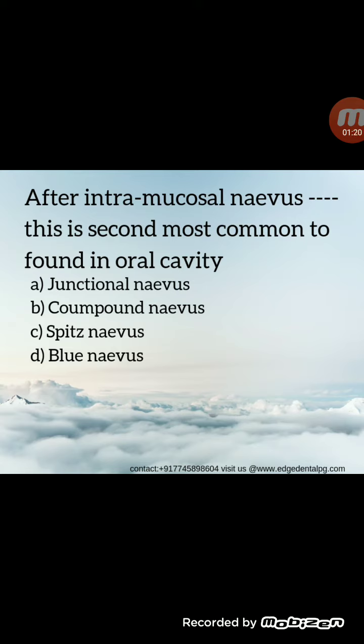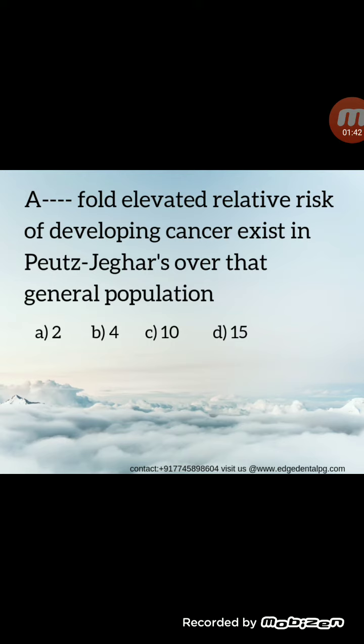Moving ahead with the third MCQ: what fold elevated risk of developing cancer exists in Peutz-Jeghers syndrome over the general population? The correct answer is a 15-fold elevated risk. In Peutz-Jeghers syndrome, there is perioral and intraoral pigmentation — the perioral pigmentation fades while intraoral pigmentation persists. There is also polyposis of the small intestine, which has a tendency for malignant transformation.